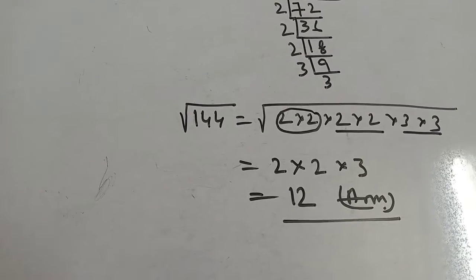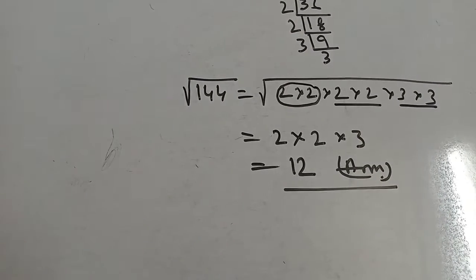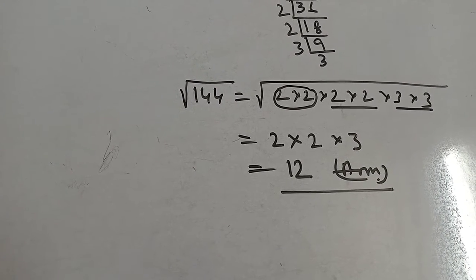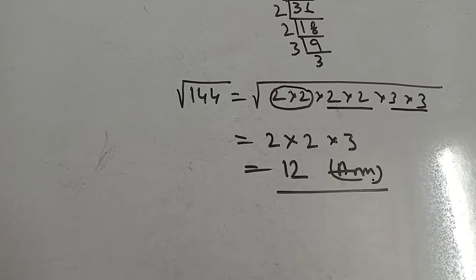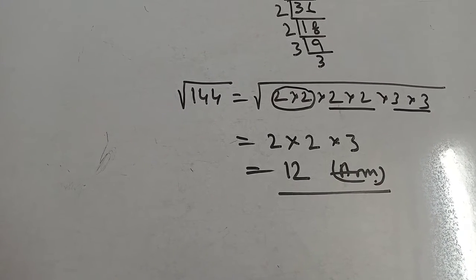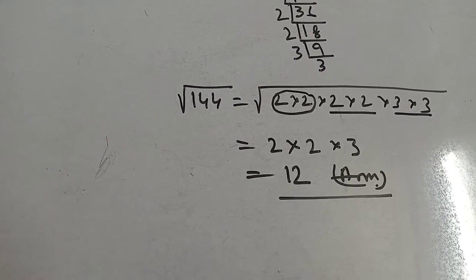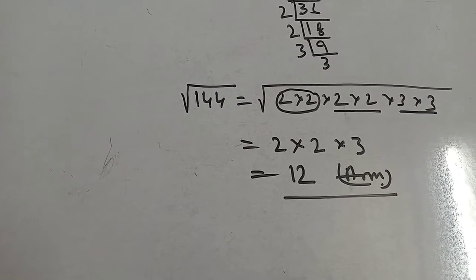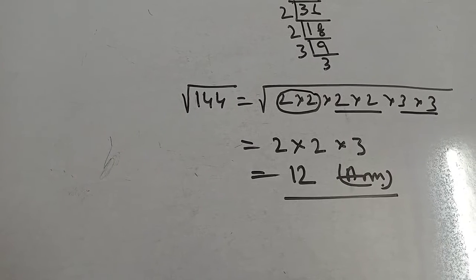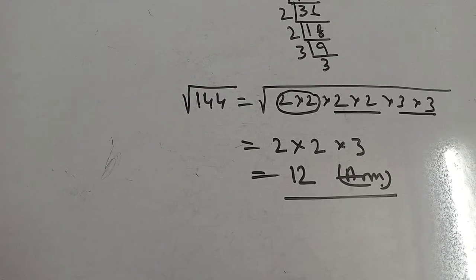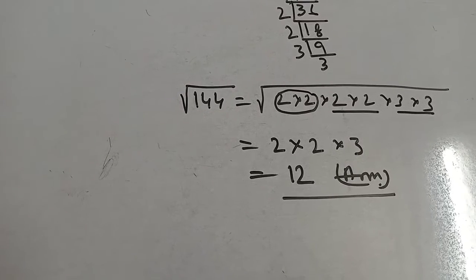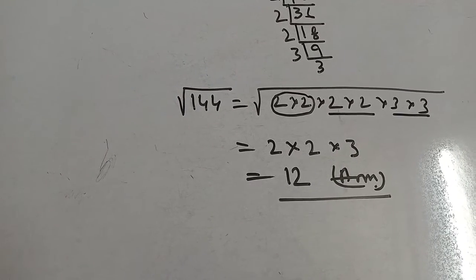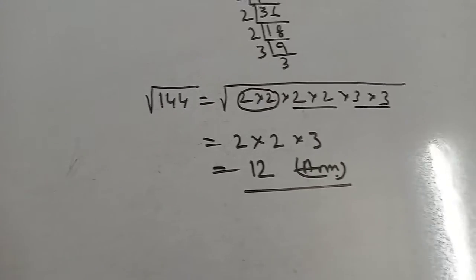Root over 144 equals root over 2×2×2×2×3×3. Now if one digit comes out, 2×2 means 2 square comes, 2 will come. Again 2×2, 2 will come. Again 3×3. Now multiply, 2×2×3 equals 12. 12 is the square root of 144.